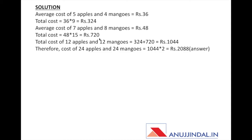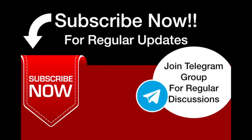The total cost of 12 apples and 12 mangoes is 324 plus 720, which equals 1044 rupees. Since we know the cost of 12 apples and 12 mangoes, we can find the cost of 24 apples and 24 mangoes by simply doubling: 1044 times 2 equals 2088 rupees. That is the final answer.